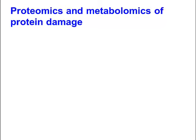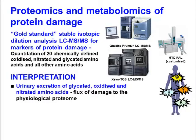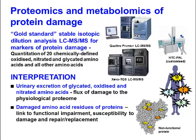We measure protein damage markers by gold standard technique — stable isotopic dilution analysis by LC-MS/MS. In our lab, we quantify about 20 chemically defined oxidized, nitrated, and glycated amino acids, and all other amino acids. Urinary excretion of glycated, oxidized, and nitrated amino acids represents the flux of damage to the physiological proteome in the whole body. Damaged amino acid residues of proteins are linked to functional impairment, susceptibility to damage, and repair replacement. These protein damage markers may be used as diagnostic biomarkers, particularly in multi-factor diagnostic algorithms.